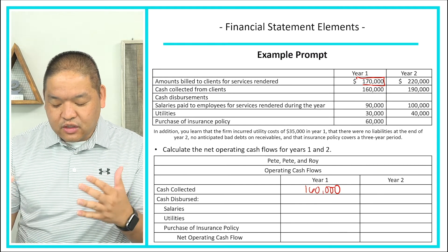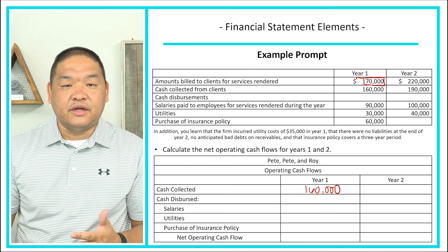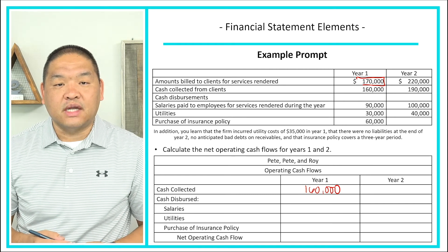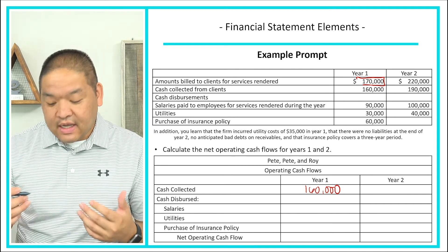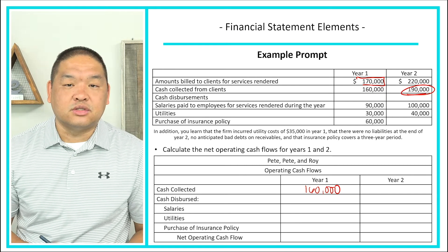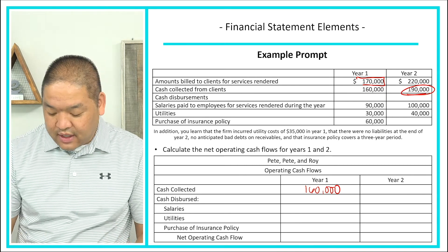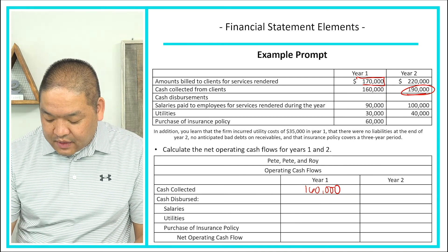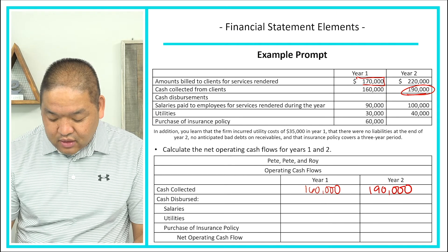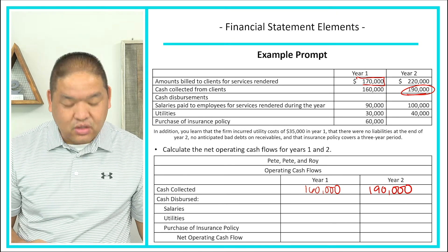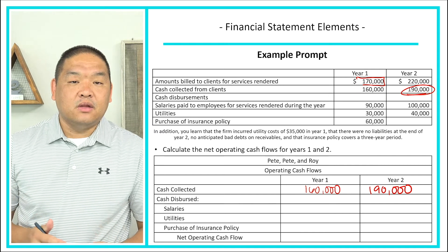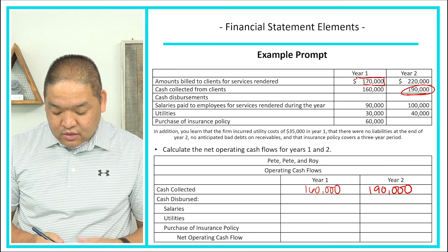Moving to year two, cash collected from clients was $190,000, so we record $190,000 as cash in for year two. Now we need to look at cash out — cash disbursements — for three items: salaries, utilities, and purchase of insurance policy.